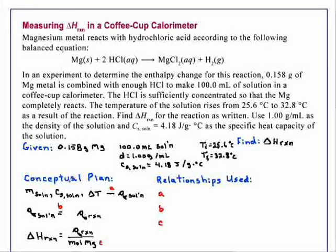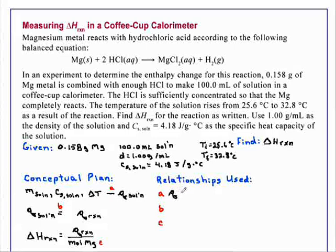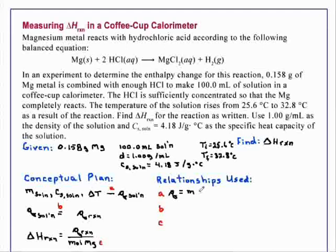In our conceptual plan, we need the mass of the solution, the heat capacity of the solution, and the temperature change to give us the heat absorbed by the solution. The relationship we are using is Q, the heat absorbed, equals mass times heat capacity times temperature change.